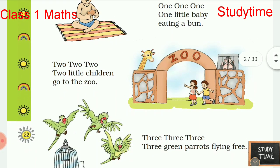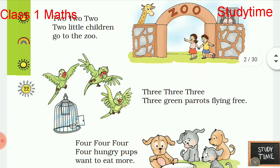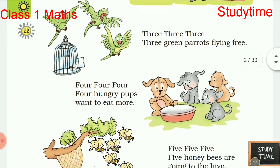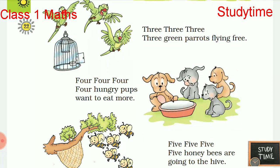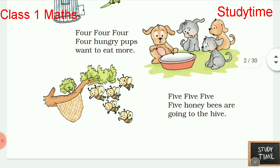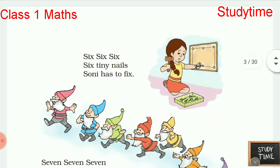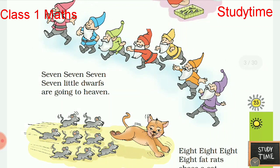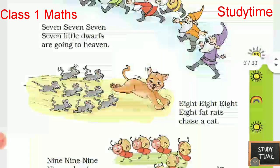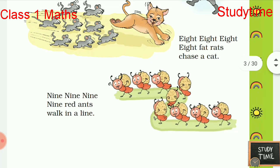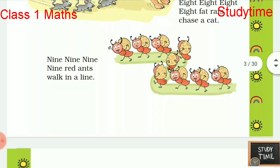One one one one little baby eating a bun. Two two two two little children go to the zoo. Three three three three green parrots flying free. Four four four four hungry pups want to eat more. Five five five five honey bees are going to the hive. Six six six six tiny nails, Sony has to fix. Seven seven seven seven little dwarfs are going to heaven. Eight eight eight eight fat carrots chase a cat. Nine nine nine nine red ants walk in a line.